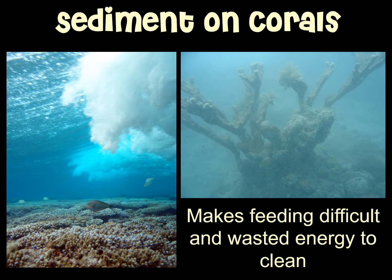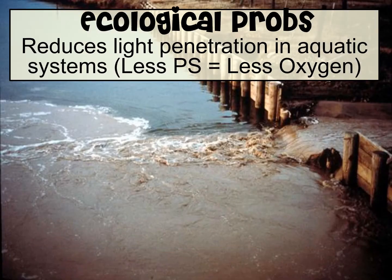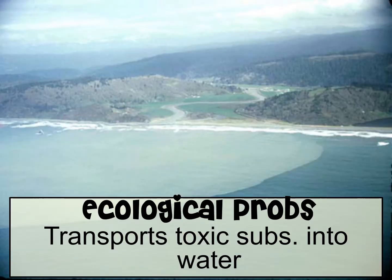Looking at these pictures, you can see sediment is blocking a lot of the sunlight. Coral have an algae living inside of them called zooxanthellae, and if the sediment is blocking sunlight that algae can't photosynthesize, so it's not making sugars for that symbiosis in the coral. There are many ecological problems associated with sediment pollution. Number one, it reduces light penetration in aquatic systems — less light means less photosynthesis and less dissolved oxygen in the waterway. Also, sediment can transport toxic substances into the water as it erodes, carrying away other materials and placing them in the water.